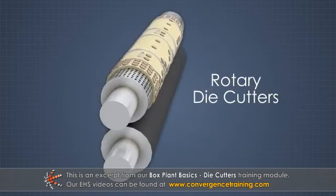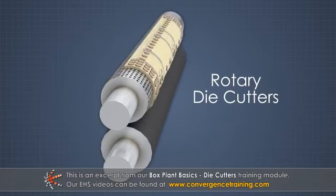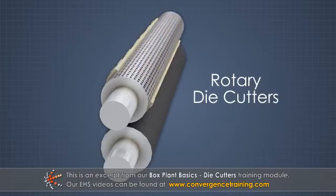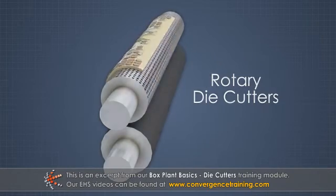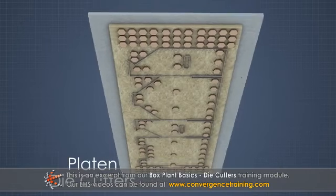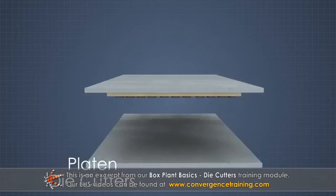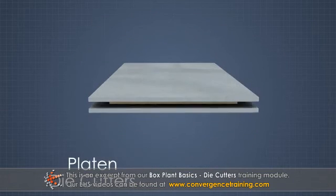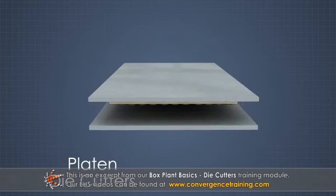Rotary die cutters use a cylindrical die board and a circular motion, while platen or flatbed die cutters use a flat die board and an up and down motion.